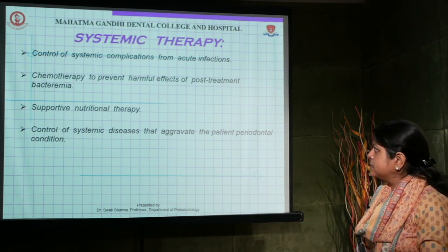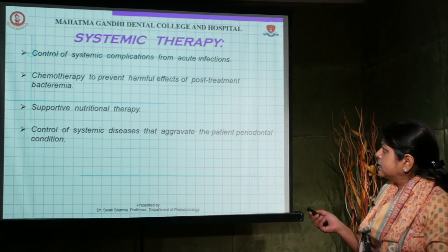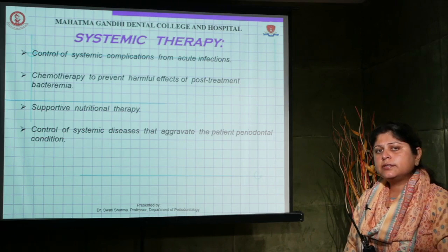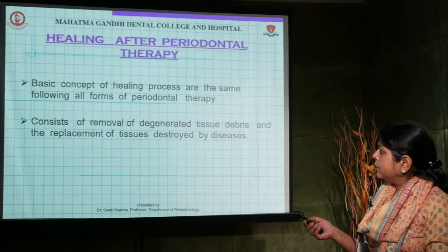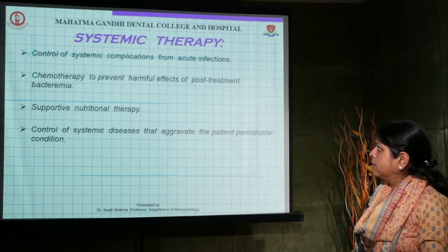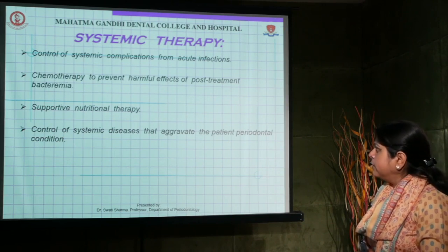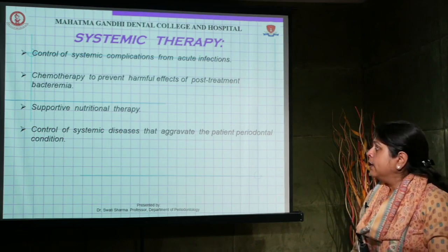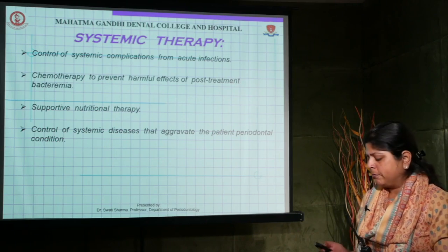Systemic therapy involves taking medications systemically. It is generally indicated when the disease is severe or when there are oral manifestations of systemic diseases. Chemotherapy is carried out to prevent harmful effects of post-treatment bacteremia, and systemic antibiotics are also given in immunocompromised cases to prevent incidents of bacteremia.